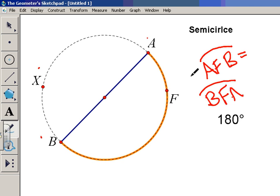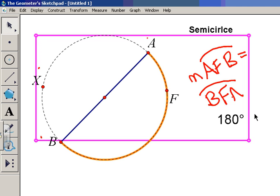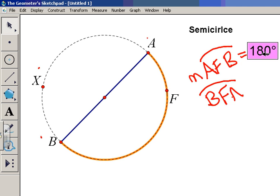So if we want to name the measure of this arc, we need to put a little M in front of there, and we need to bring the 180 degrees up. And now we know that the measure of arc AFB is 180 degrees, making it a semicircle.